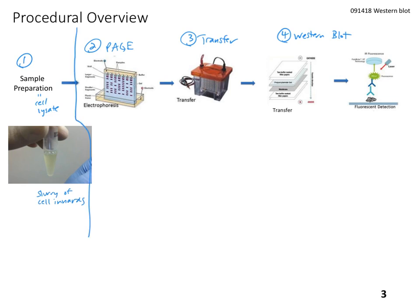The second step is called PAGE — all capital letters — which stands for polyacrylamide gel electrophoresis. The root 'gel electrophoresis' should sound familiar: when you run a DNA gel, you run agarose gel electrophoresis; for proteins, we use polyacrylamide as the matrix. The gels run vertically instead of horizontally, and you can see bands separating out just like a DNA gel — but here we're separating proteins.